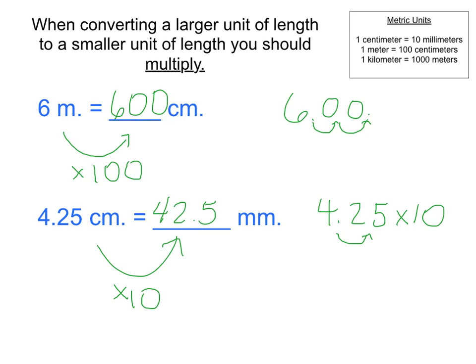If it's confusing to you, think about estimation. 4.25 is close to 4, and 4 times 10 is 40. So our estimate should be close to our final answer, which it is.